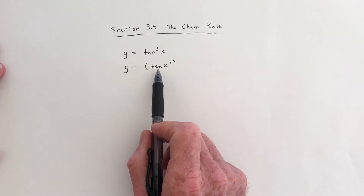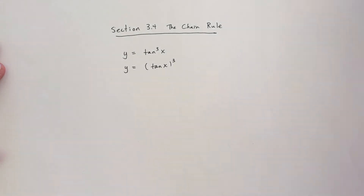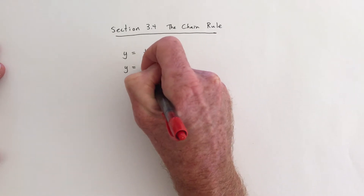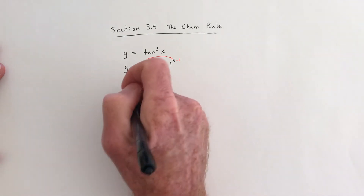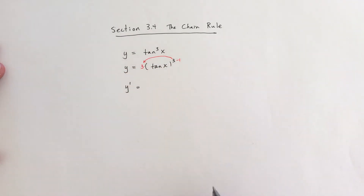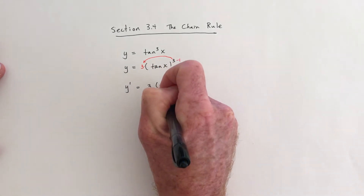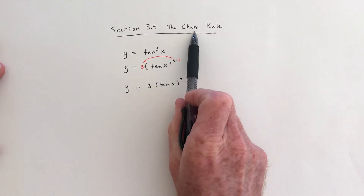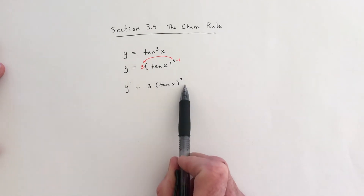In general you cannot take two derivatives at the same time. So I take the derivative of the outside function, which means I take the 3, bring it down and multiply, and then subtract 1 from the exponent. So the derivative — which you could write as dy/dx or y' — is going to be 3 and then tangent of x is squared. The chain rule says you also need to take the derivative of this inside function and multiply by that.